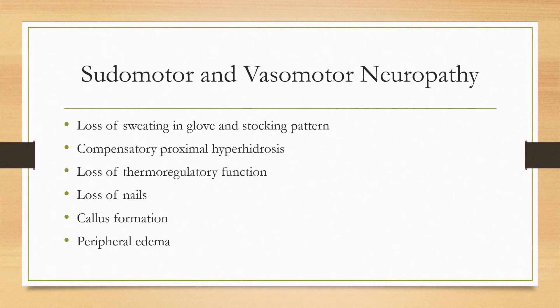In terms of the pseudomotor and vasomotor manifestations of autonomic neuropathy, you'll have loss of sweating in a glove and stocking pattern, which can lead to proximal compensatory hyperhidrosis. Eventually you'll lose thermoregulatory function. There can also be loss of nails, callus formation, and peripheral edema.